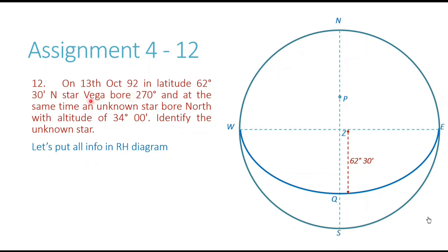The next information in the question is that star Vega bore 270. In this diagram, the 270 bearing is represented by line ZW, so Vega has to be somewhere on this line. I don't know the altitude of Vega, so I'll pick a random location on it and place star Vega there. We now have star Vega in our rational horizon diagram.